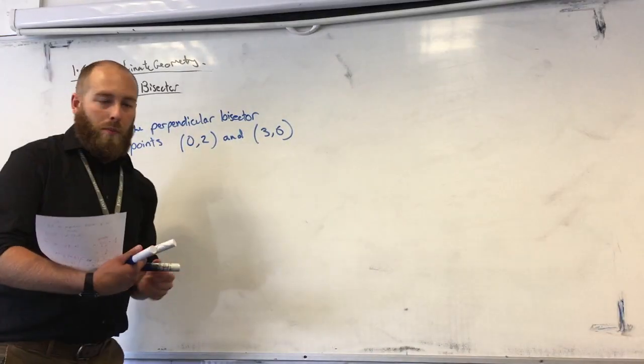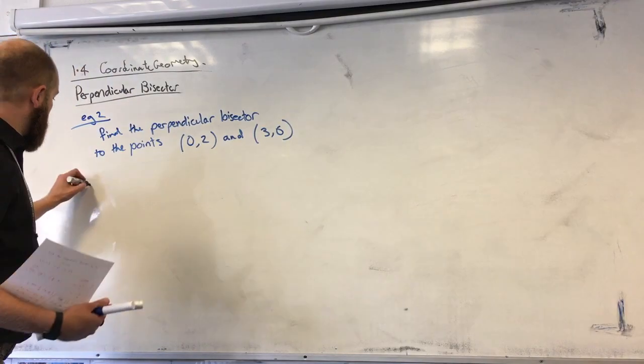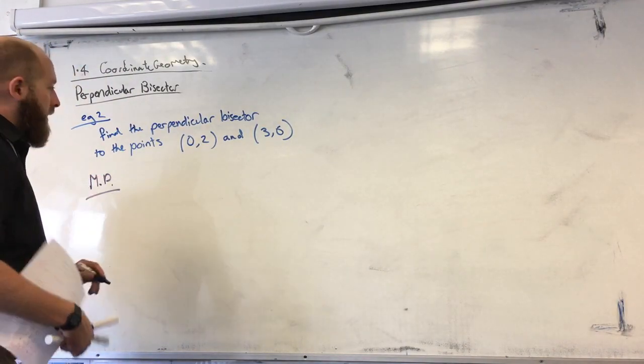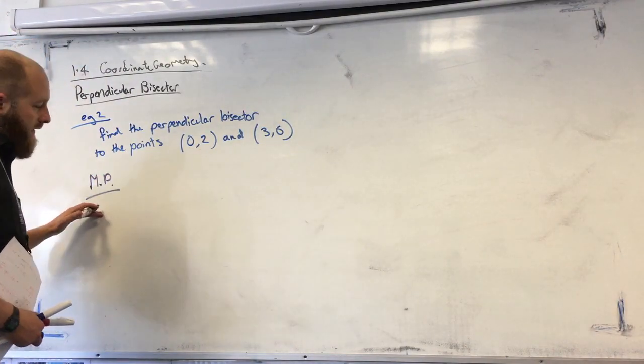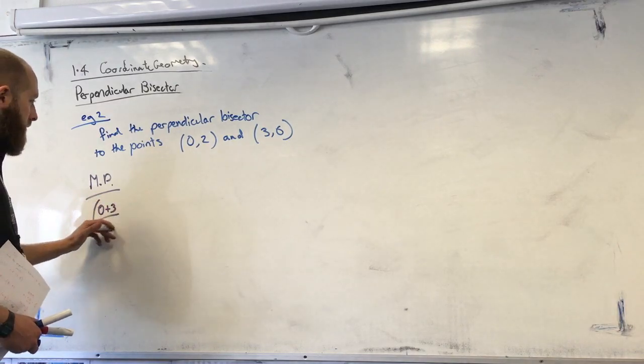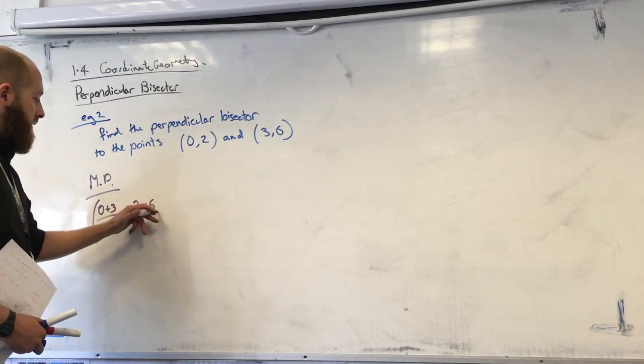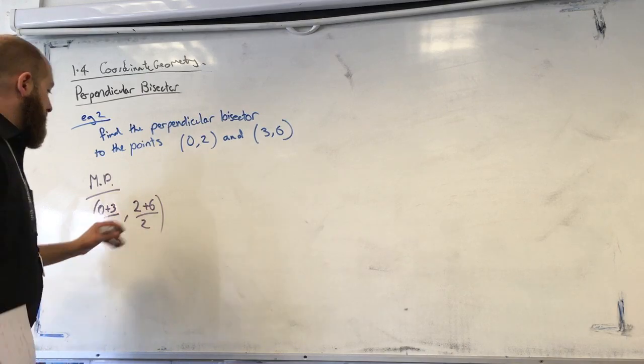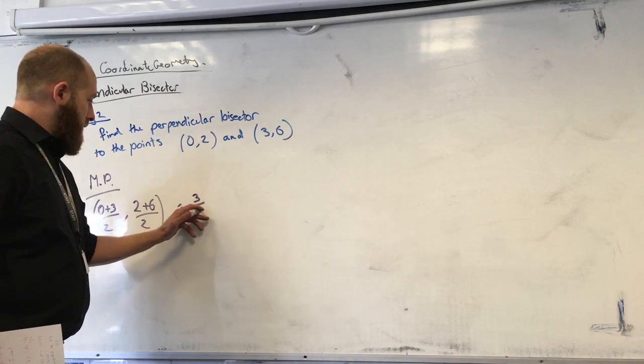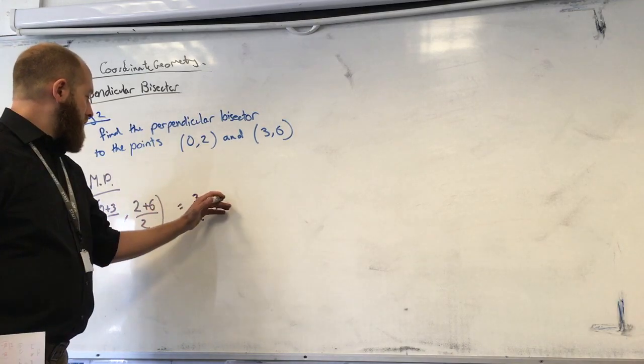Okay, so first of all, midpoint. So average of the x's, average of the y's. So 0 plus 3 over 2, and 2 plus 6 over 2. So we get 3 over 2, and 4.